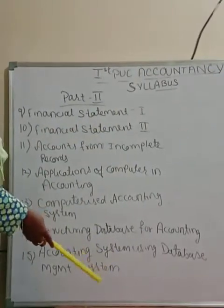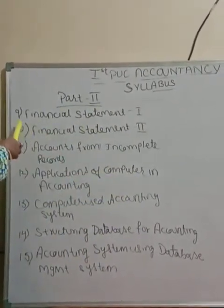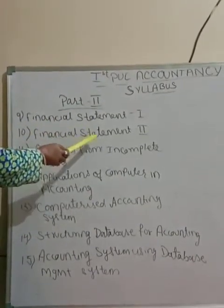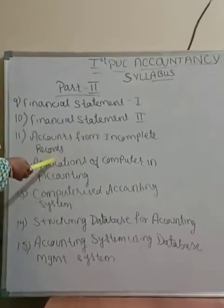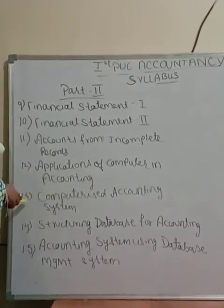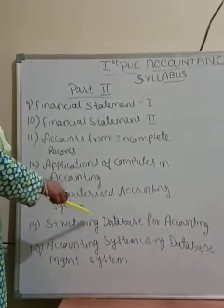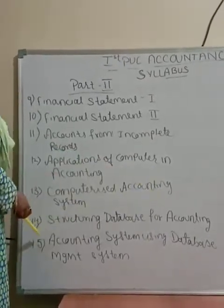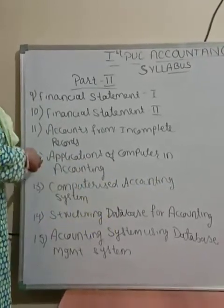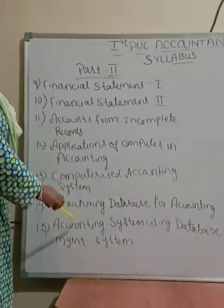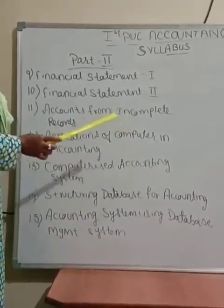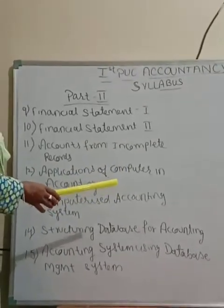To summarize, in Accountancy Part 2 we study: Chapter 9 — Financial Statement Part 1, Chapter 10 — Financial Statement Part 2, Chapter 11 — Accounts from Incomplete Records, Chapter 12 — Applications of Computers in Accounting, Chapter 13 — Computerized Accounting System, Chapter 14 — Structuring Database for Accounting, and Chapter 15 — Accounting System Using Database Management System. Chapters 12 to 15 all relate to how computers are used in accounting. This completes the syllabus overview of Accountancy Part 2.